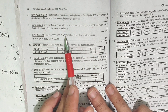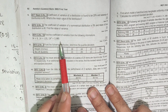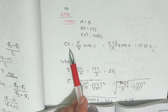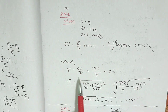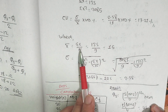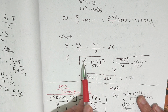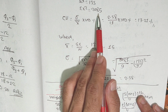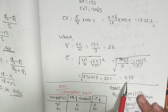The information given is: n equals 9, summation of x equals 135, summation of x squared equals 2085. Using this raw data, the answer is 2.58.